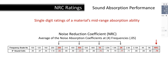The NRC, which stands for Noise Reduction Coefficient, is a single number representation of the amount of sound energy absorbed upon striking a particular surface. An NRC of zero indicates perfect reflection; an NRC of one indicates perfect absorption. The NRC is calculated by averaging the sound absorption coefficients at four mid-range frequencies — 250, 500, 1000, and 2000 hertz — then rounding to the nearest 0.05 increment.